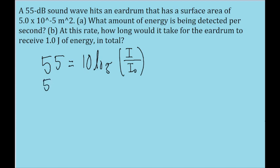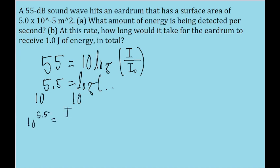So this 55 just becomes 5.5, equal to the log of the ratio. Then we'll raise 10 to the power of both sides of the equation, because that'll cancel out with the log. So we find that 10 to the power of 5.5 is equal to the ratio of the intensities. And finally, we'll just multiply both sides of the equation by I₀ to solve for I. So I is equal to I₀ times 10 to the power of 5.5.